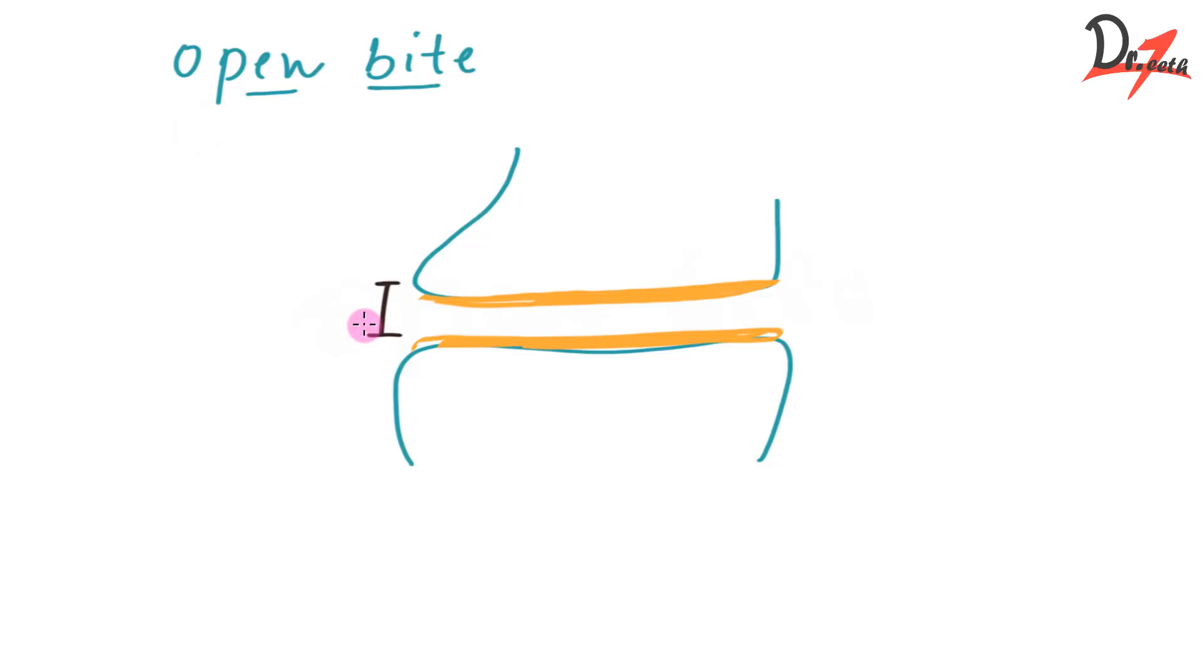So it could be of two types. If the bite is open anteriorly, that will be called as anterior open bite. And if it is open posteriorly, then it will be known as posterior open bite. This was a very basic idea about what is anterior open bite and what is posterior open bite.